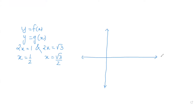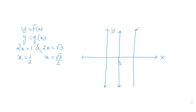Let me plot these lines first. x = 1/2 is a vertical line parallel to the y-axis at a distance of 1/2 units. x = √3/2 is another vertical line — √3/2 is approximately 0.866 — and our region lies between these two lines.